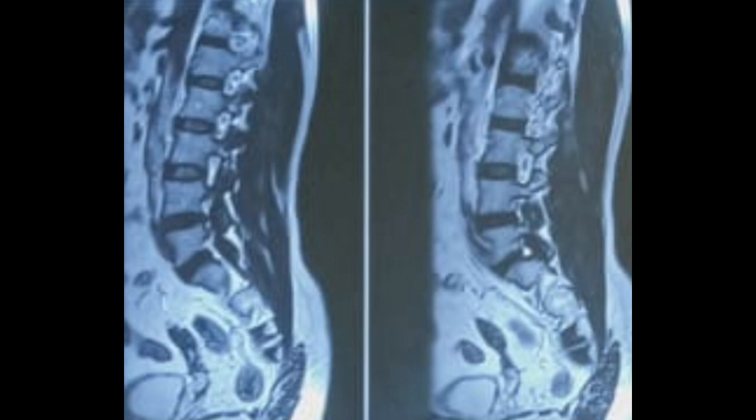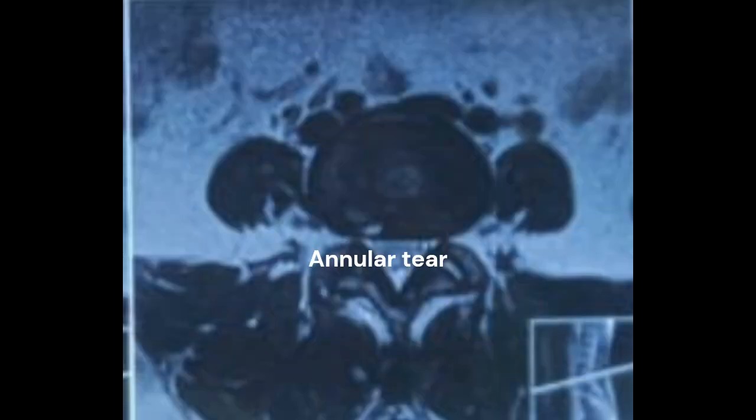The MRI shows a prolapsed intervertebral disc at L4-5 with an evident annular tear. Sagittal sections show significant stenosis of a region called the lateral recess and foramen. Axial sections confirm the same.